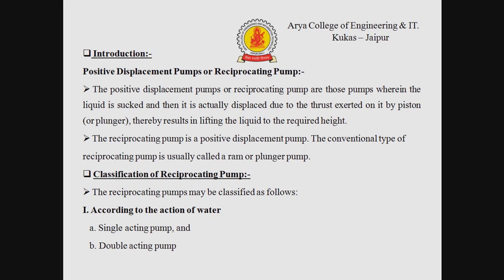We can also say the positive displacement pump. Positive displacement pumps or reciprocating pumps are those pumps where the liquid is sucked and then displaced due to the thrust exerted on it by a piston, thereby resulting in lifting the liquid to the required height. The reciprocating pump is a positive displacement pump. The conventional type is usually called a ram or plunger pump.